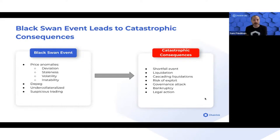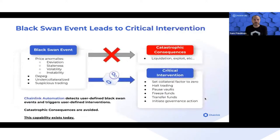In the event of suspicious trading of a governance token, that might indicate a governance attack or worse. With automation, the user can detect these conditions every single block — Chainlink Automation tests the trigger condition for one of these black swan events.